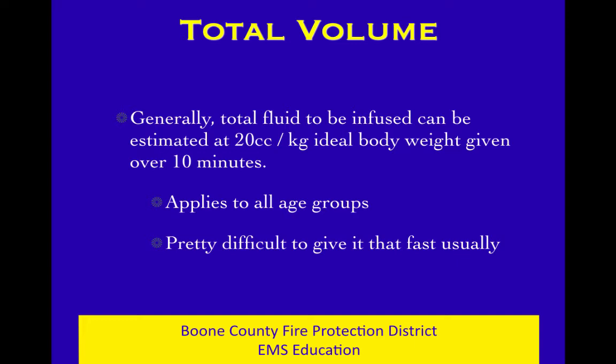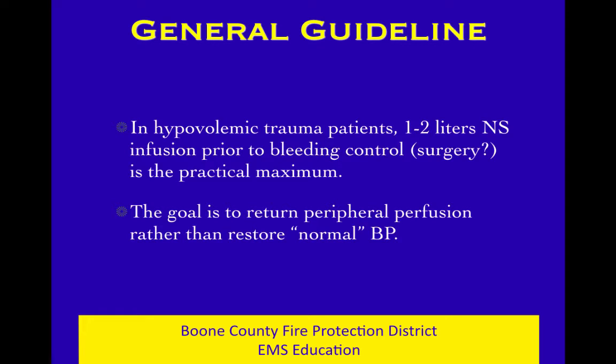We want 20 cc's per kilo ideal body weight given over 10 minutes. Does anybody do this in the field? Particularly with pediatric patients — we try to estimate their weight, we measure their length, assume that length and weight are proportional, use a chart, come up with what they ought to weigh, multiply that by 20 cc's, and get a number. A good general guideline for all ages and anyone that's low on volume — whether actual or relative — is one to two liters of saline is a reasonable thing to do: one or two liters of saline infusion before you get bleeding control.